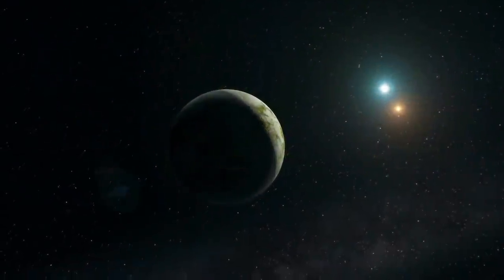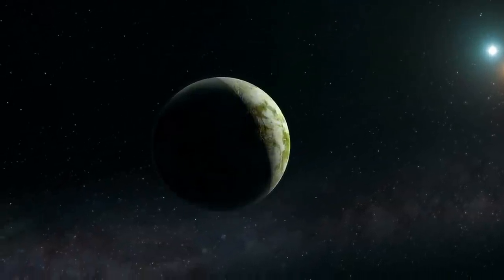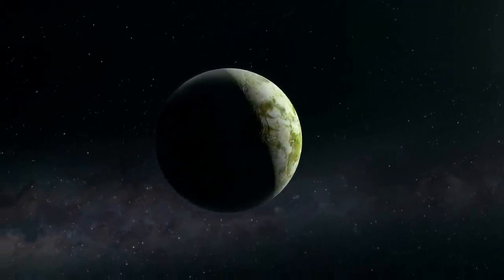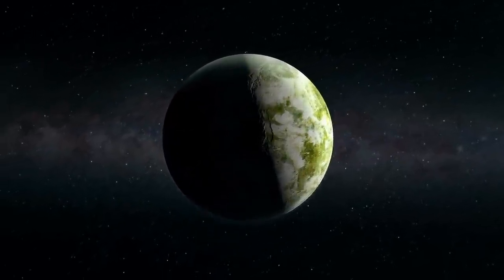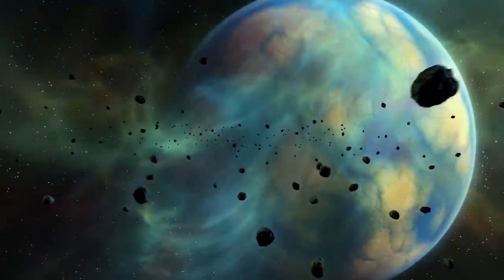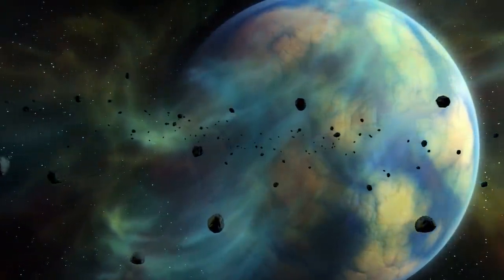All we really know, in the context of the equation, is that most stars probably have planets, and that the galaxy has about half a trillion stars. We also now know that there are billions of galaxies, and indeed a lot of stars in between those galaxies as well, but again all this really does is change the educated guess we make about that first factor.